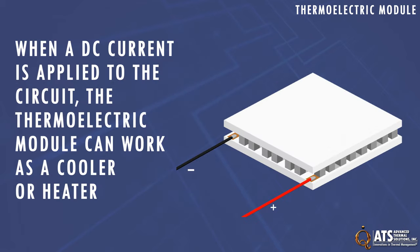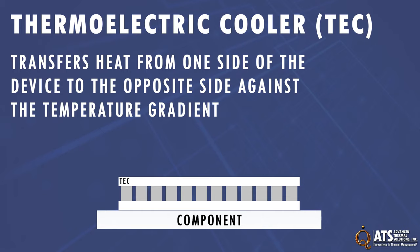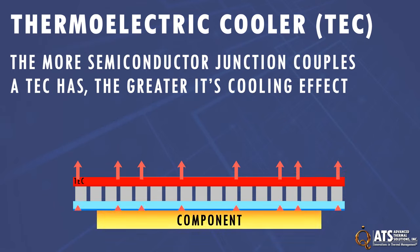When a DC current is applied to the circuit, the thermoelectric module can work as a cooler or heater, depending on the direction of the current. A thermoelectric cooler, or TEC, transfers heat from one side of the device to the opposite side against the temperature gradient, creating a cooling effect. The more junction couples a TEC has, the greater its cooling capability.